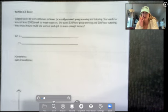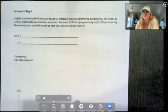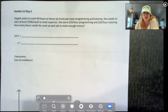So Angela wants to work 40 hours or fewer, so at most 40 hours per week programming and tutoring. She needs to earn at least $500 a week to meet her expenses. She earns $20 an hour programming and $10 per hour tutoring. How many hours could she work at each job to make enough money while making the constraints of her hours?